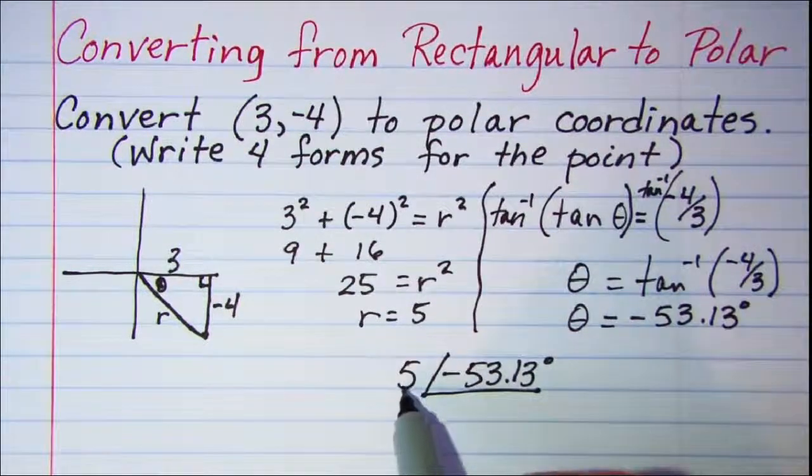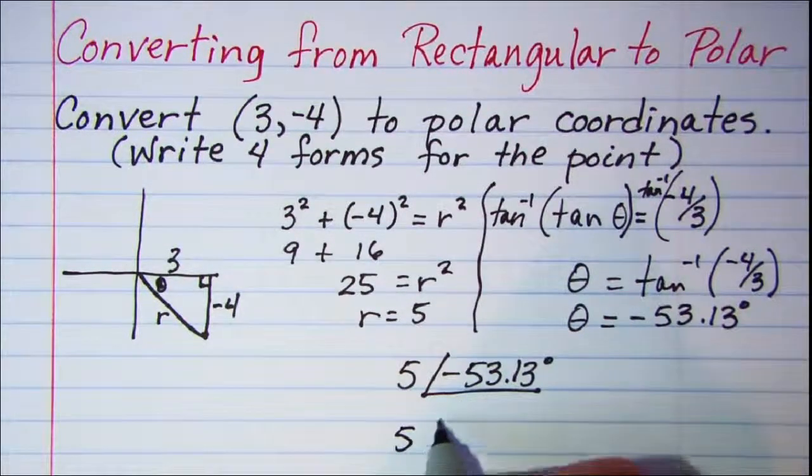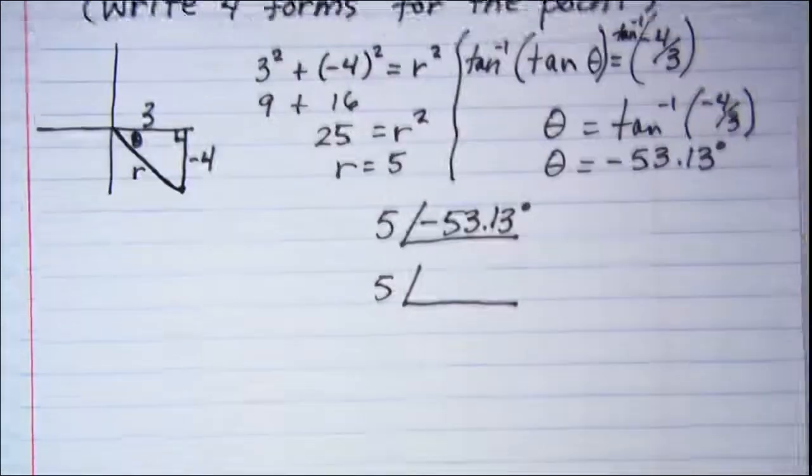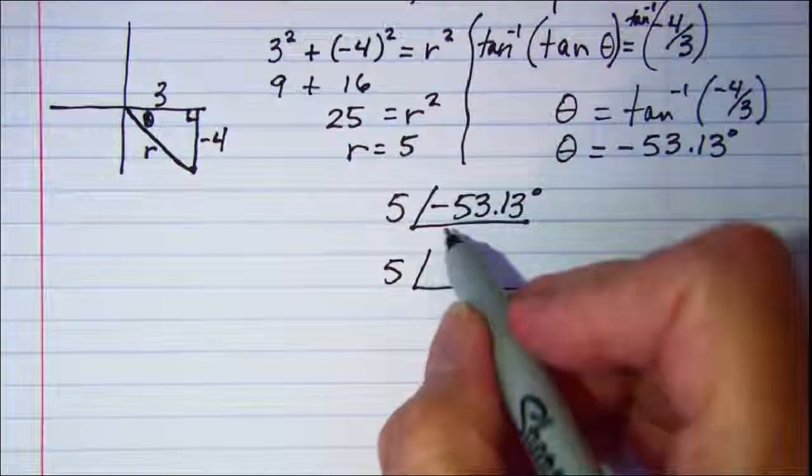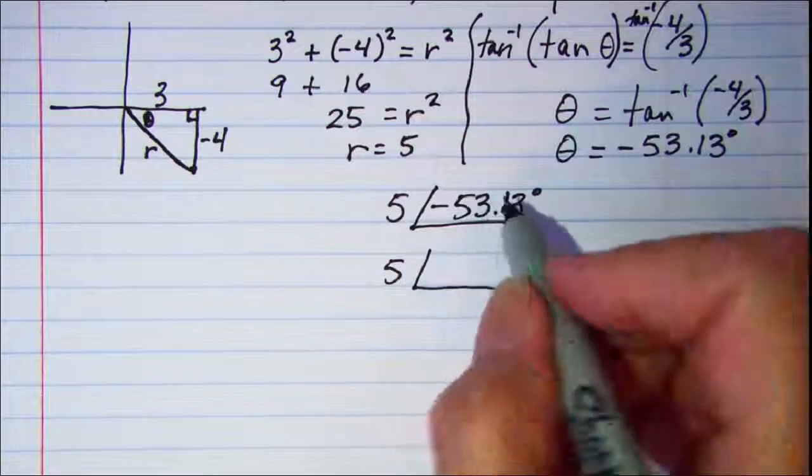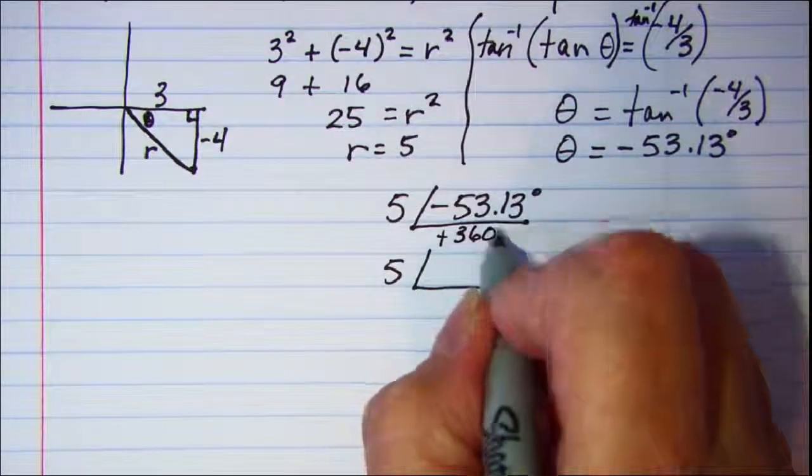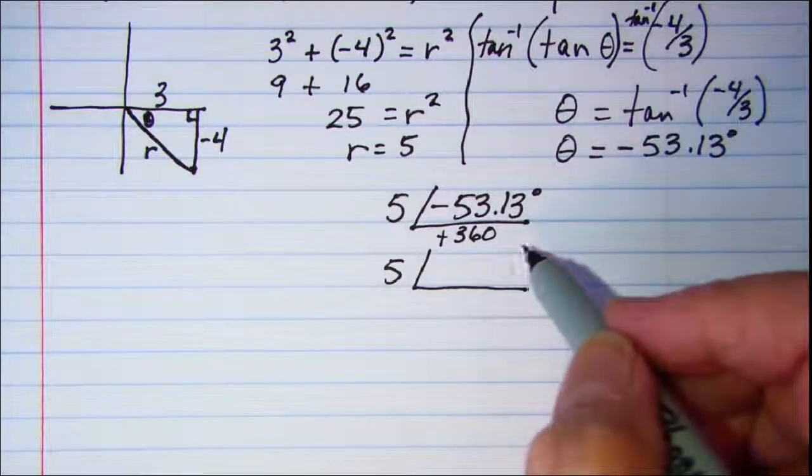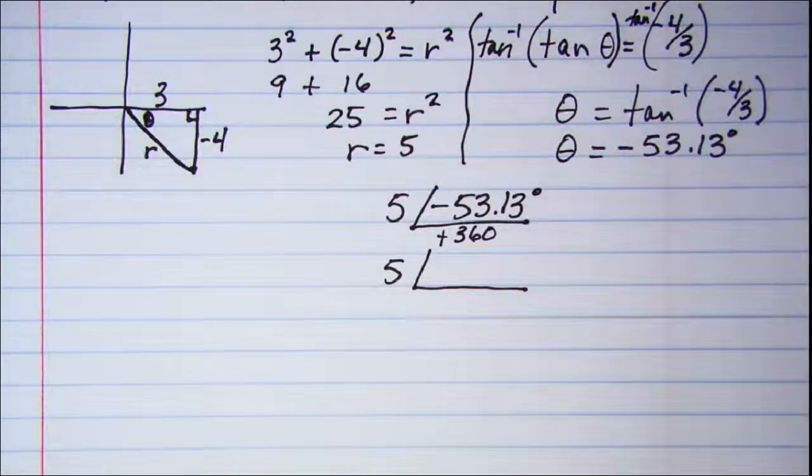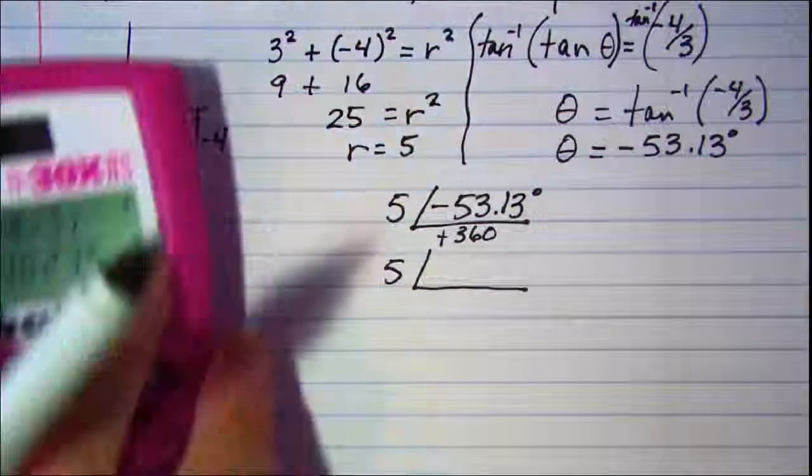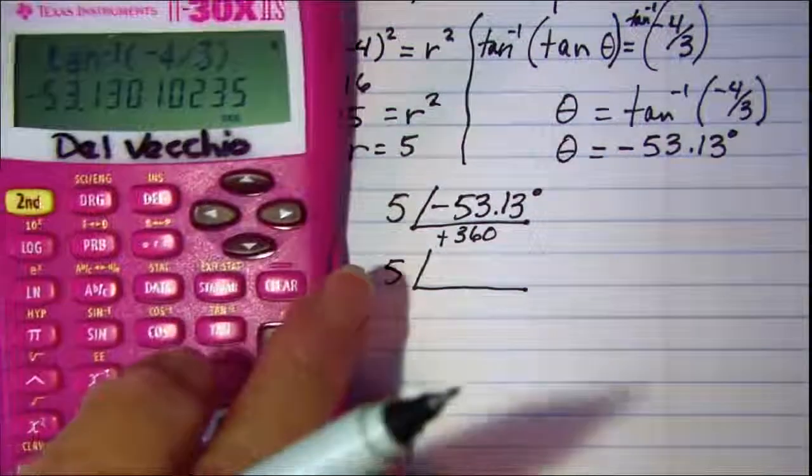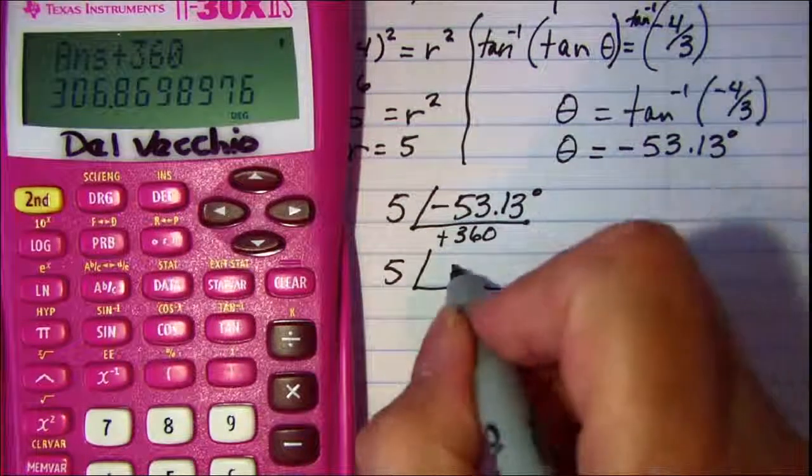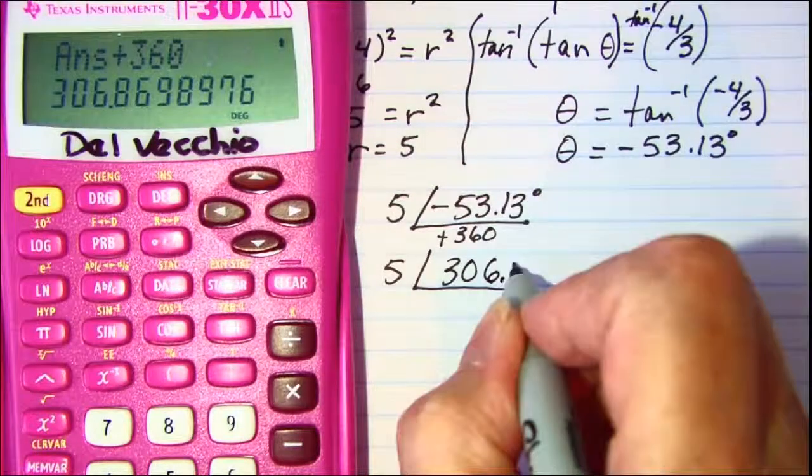Now if we want to keep positive 5 as the r value and just get a different angle measure, we can add 360° to this since this is a negative angle. That will give us the same thing with just a positive 360° rotation, which doesn't change the position. So if we add 360 here, we get 5∠306.87°.